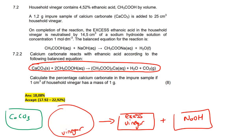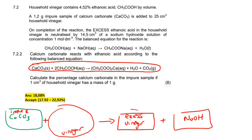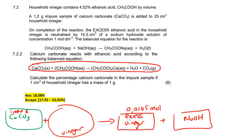To summarize so far: we had the impure calcium carbonate added to the vinegar. The excess vinegar was then reacted with NaOH, and we found there was 0.0145 mol of excess ethanoic acid.